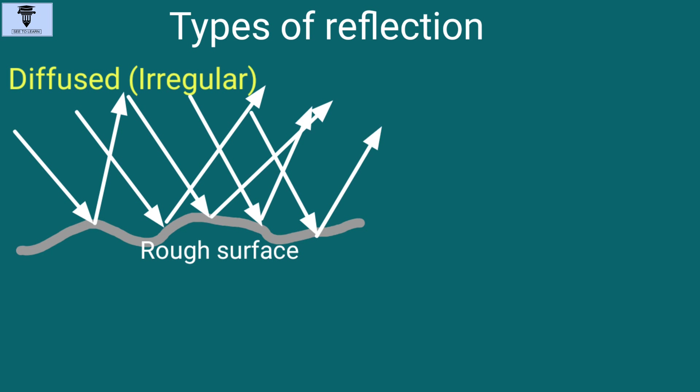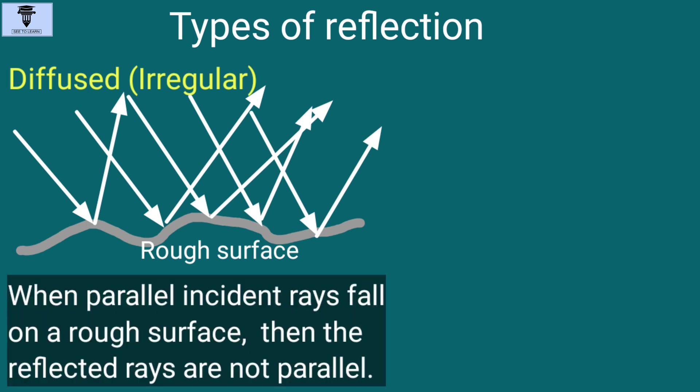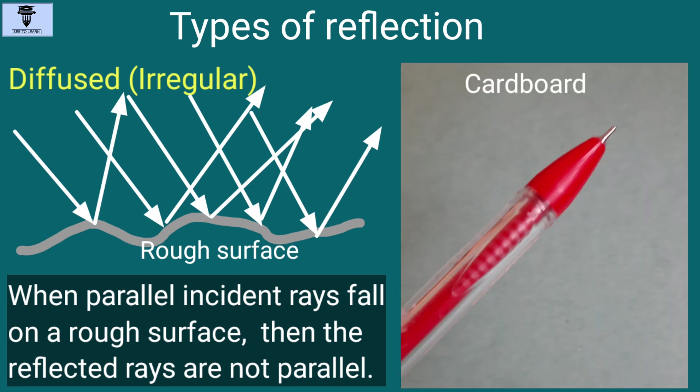But when the parallel incident rays fall on a rough surface, like that of a cardboard, the reflected rays are not parallel. This is called diffused or irregular reflection of light. An image cannot be formed due to diffused reflection of light.